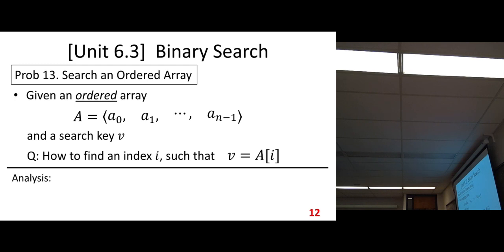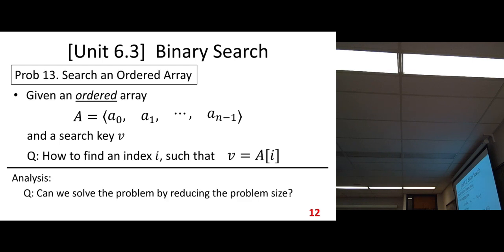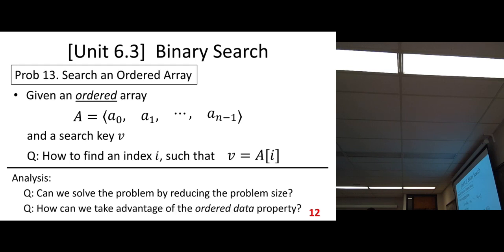The problem is how do we divide the problem? The original problem has size n. We want to split the problem into smaller sub-problems — conquer some of the sub-problems. The question is how to reduce: what is the appropriate problem size you want to choose? That's the main issue. We need to do some detailed analysis here and take advantage of the ordered data property — don't forget this, it is the most important property in this problem.